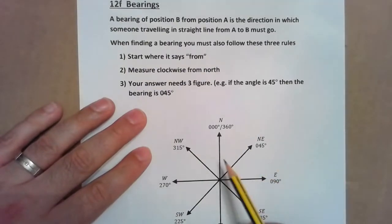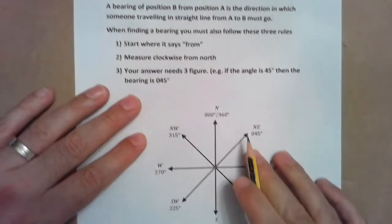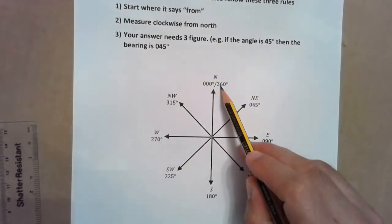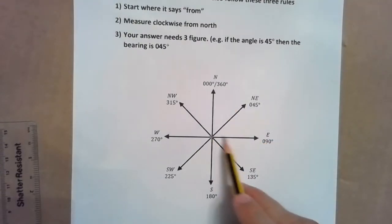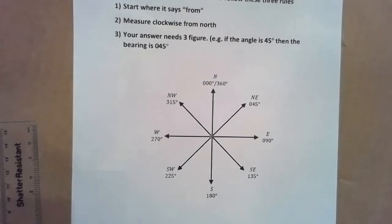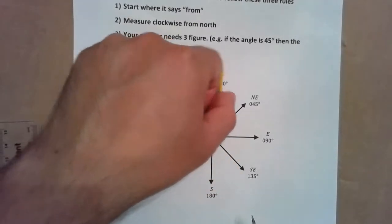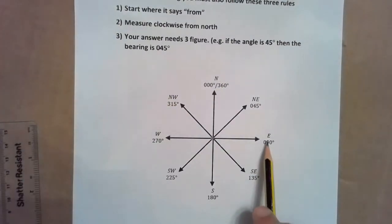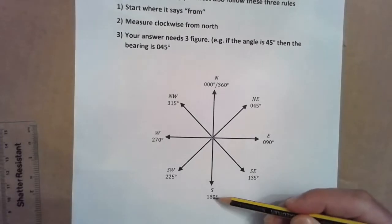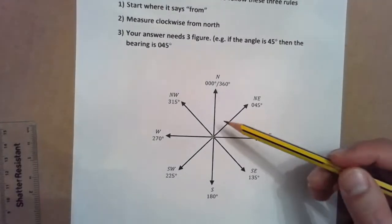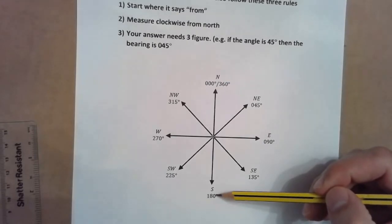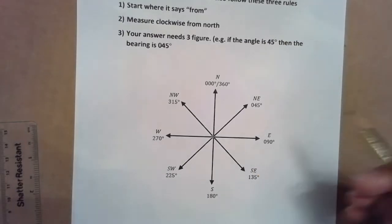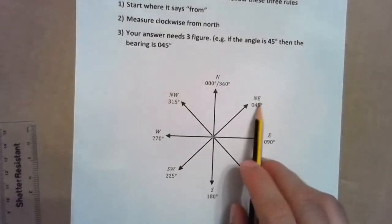By definition, because the bearing is measured from north, if you're traveling from a given point towards north then you're traveling a bearing of 000. If you're traveling east, because you've made a 90 degree turn from north, the bearing is 090. Likewise if you're traveling south, that's 180 degrees.